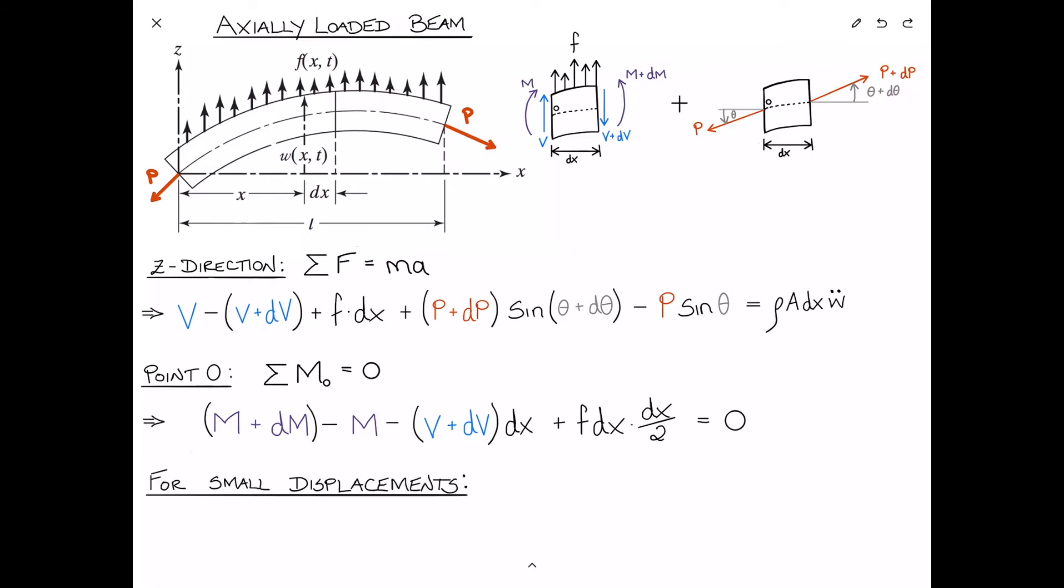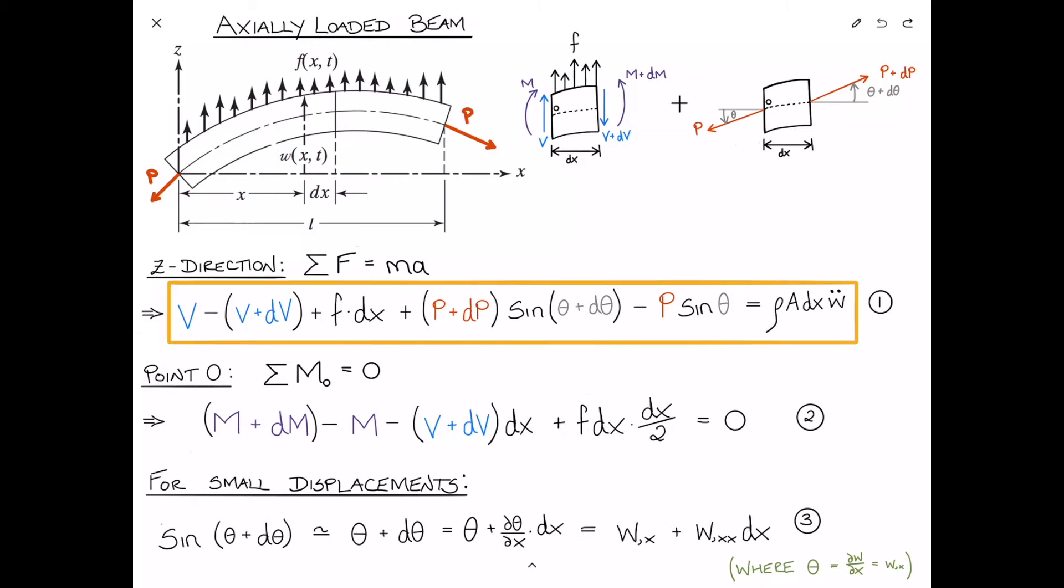Since we're making a small displacement assumption, we can approximate sine of theta plus d-theta as approximately equal to theta plus d-theta, which can be approximated as theta plus partial theta partial X dx. This can be rewritten as theta is W comma X, the derivative of W with respect to X, which is the slope of the beam, plus W comma XX dx. Let's give these some numbers: number one, number two, and number three. We want to use equations one and two for later, so I'm going to put a box around them.